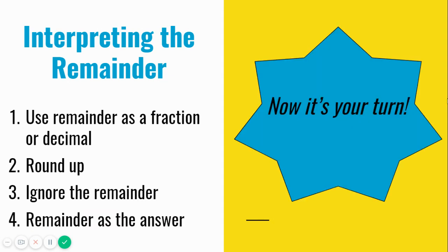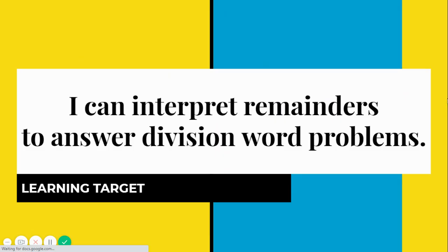Now it's your turn. Today you will be working on solving division problems, and you will need to interpret any remainders to help you answer the question. Remember to consider the ways you can interpret the remainder. The remainder can be part of your answer as a fraction or decimal. You can round up to the next whole number. You can ignore the remainder, or use the remainder as your answer. If you need support as you interpret remainders to answer today's story problems, then feel free to watch the video again. And if you still need support, reach out to your teacher.